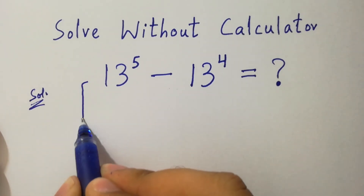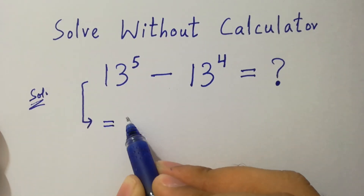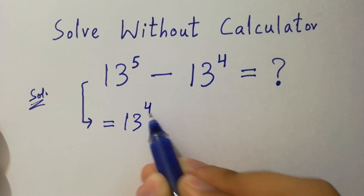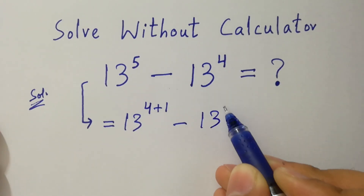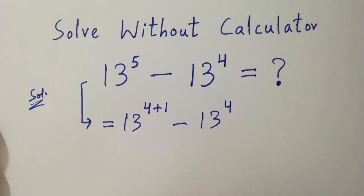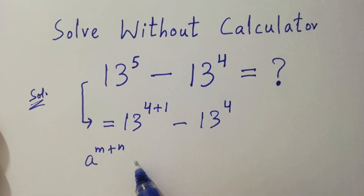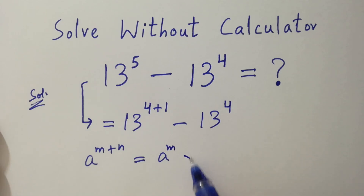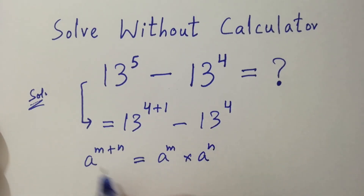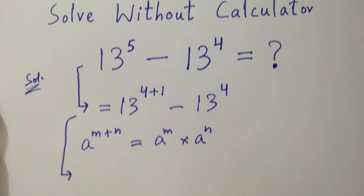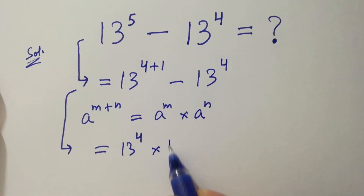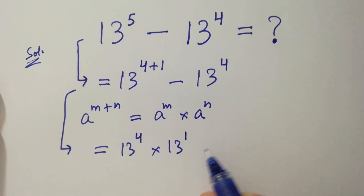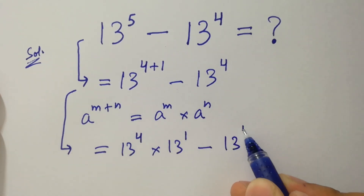This problem is the same as 13 to the power 4 plus 1 minus 13 to the power 4, since 4 plus 1 is 5. Since a to the power m plus n equals a to the power m times a to the power n, then it will be 13 to the power 4 times 13 to the power 1 minus 13 to the power 4.